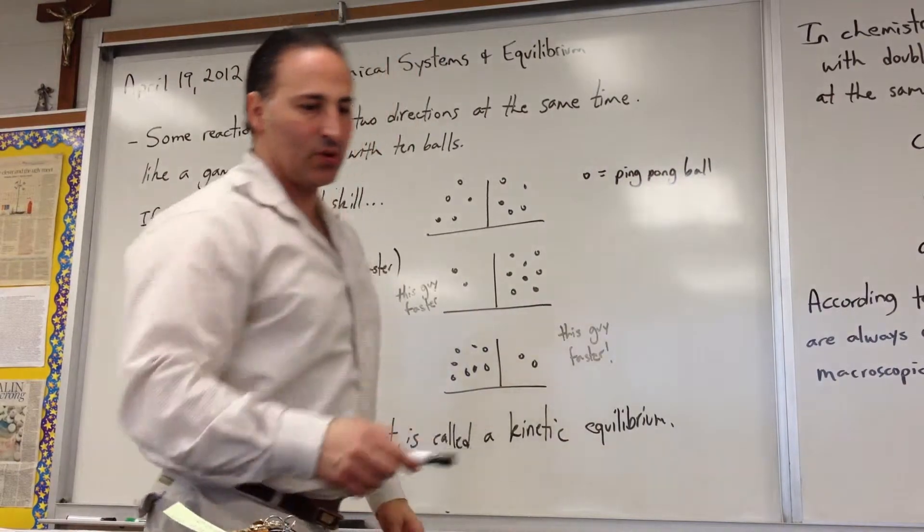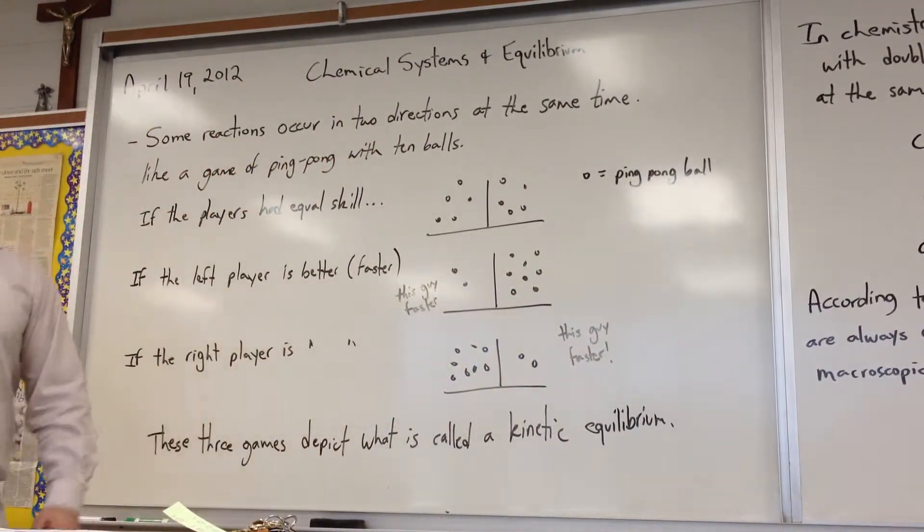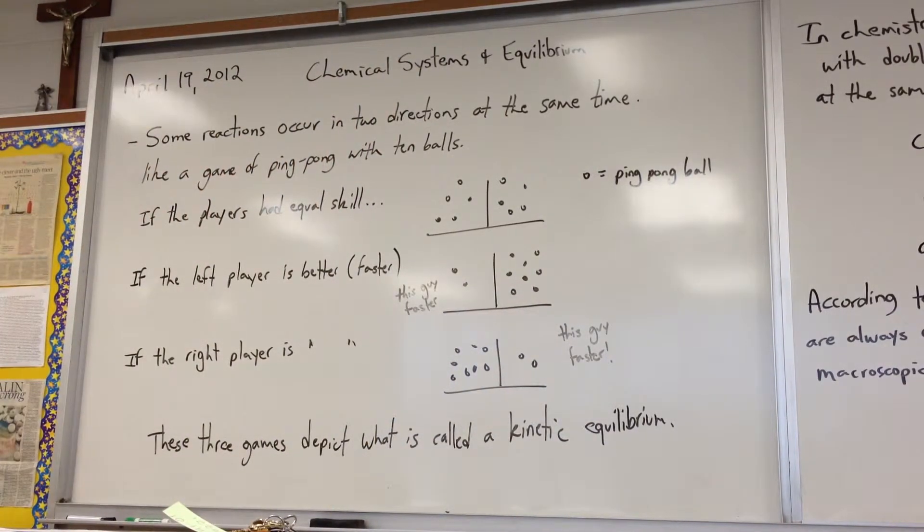When those two reactions achieve the same rate, they're both still going, but they even up so that there's no macroscopic change. If you could shrink yourself down to the size of an atom, you would see that there's a forward reaction taking place and also a backward reaction, both of them taking place at the same time.